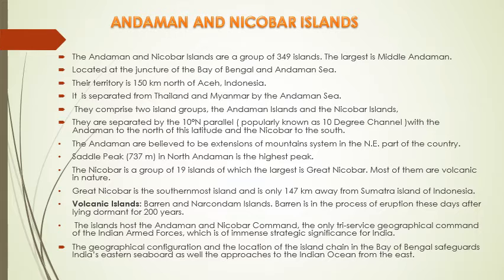Nicobar island ke andar 19 chote-chote dweep paaye jaate hain. Iske andar largest — sabse bada jo dweep hai — wo hai Great Nicobar. Yeh ek volcanic origin wala dweep hai, yani ki jwala-mukhi dweep maana jaata hai. Great Nicobar southernmost island hai, aur yeh 147 kilometers Indonesia ke Sumatera dweep se hai. Volcanic islands — Andaman and Nicobar ke andar Barren and Narcondam island — unko volcanic eruption wale islands maana jaata hai. Barren island ko erupt hue 200 years ho gaye hain, yani ki yeh dormant volcanoes ki series ke andar aata hai.